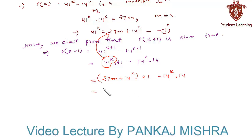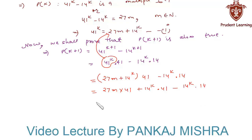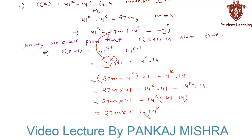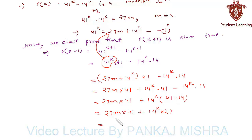This gives us 27m into 41 plus 14 raised to k into 41 minus 14 raised to k into 14. Taking 14 raised to k common from the last two terms, we have 27m into 41 plus 14 raised to k into (41 minus 14), which is 27. Taking 27 common from both terms, we get 27 into (41m plus 14 raised to k), which is a multiple of 27.